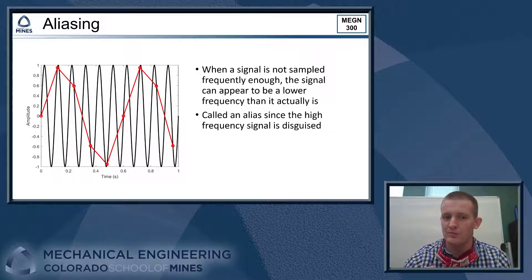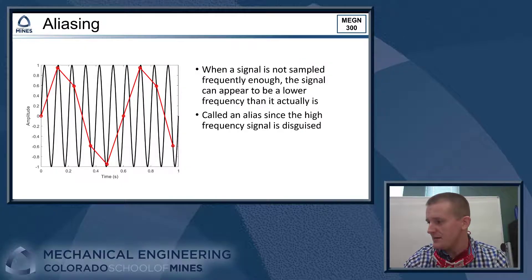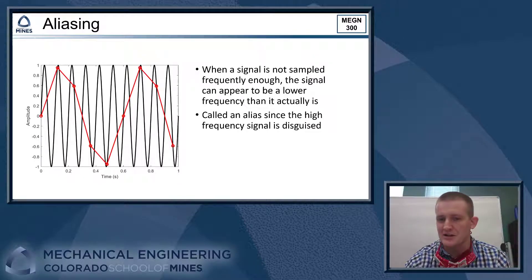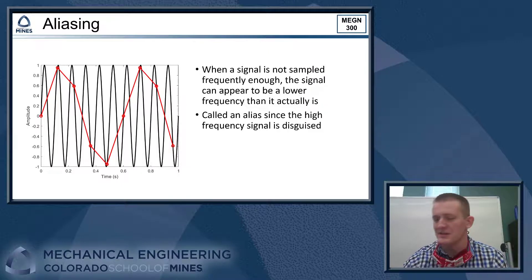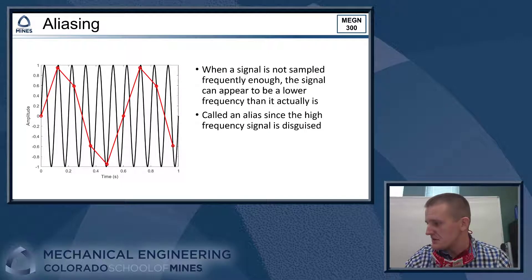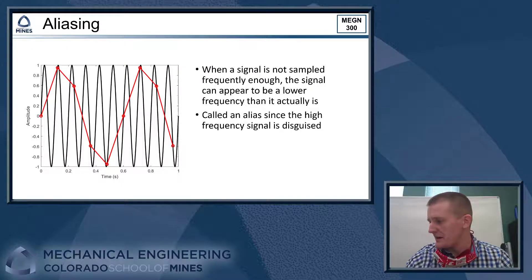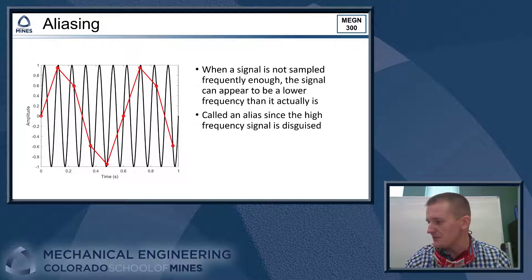And when this happens, our high frequency signal appears to be a much lower frequency than it actually is. We call this an alias because it's our high frequency signal under sort of a false name or a false identity or in disguise. So we call that an alias signal when it's showing up as a fake low frequency signal in our data.